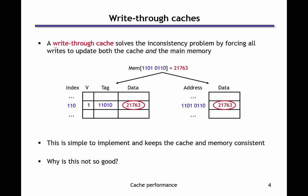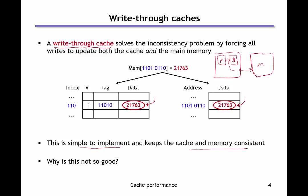One solution is to use a write-through cache. A write-through cache solves this inconsistency problem directly by writing not only to the data in the cache, but also updating memory at the same time. So the processor, which is on the same chip as the data cache, will write to the data cache and also send that data down to main memory, updating both simultaneously. This is logically simple to implement and keeps the cache and memory consistent.